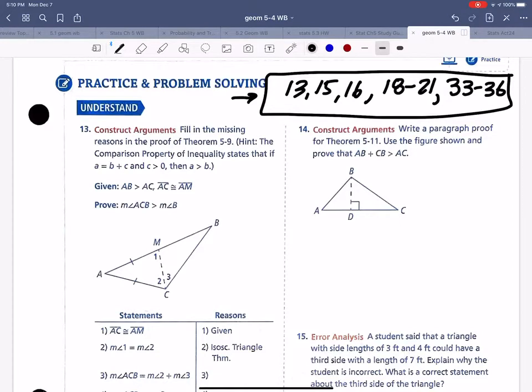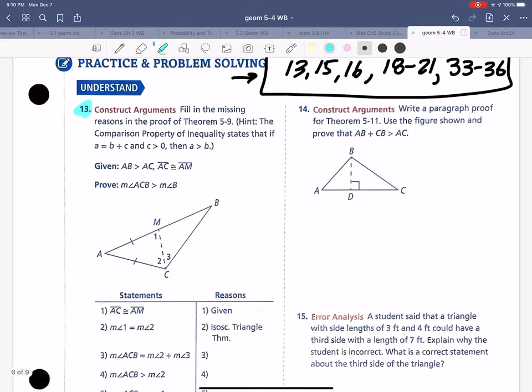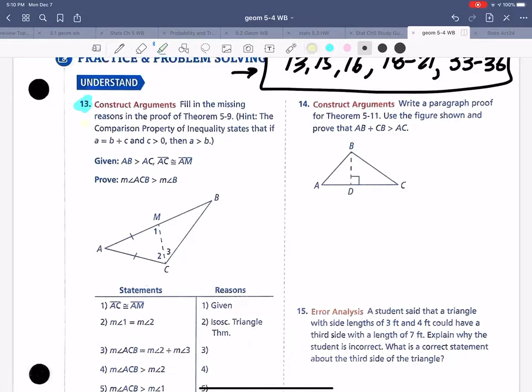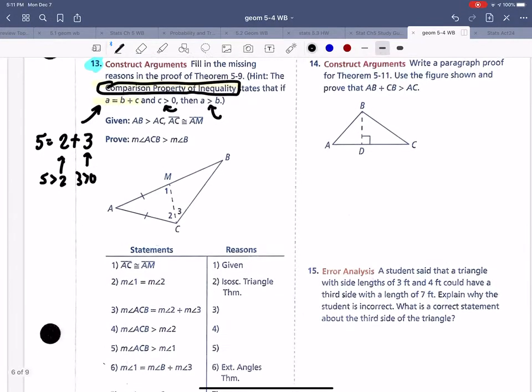So let's look at these homework problems. It says problem 13, construct arguments, fill in the missing reason for the proof of Theorem 5-9. Hint, the comparison property of inequality states that if A is equal to B plus C, so let's plug in a number that makes sense. So like if A is 5 and B and C are 2 and 3, then notice this number has to be greater than 0, and this number 5 has to be greater than 2. So this is another property that we can use.